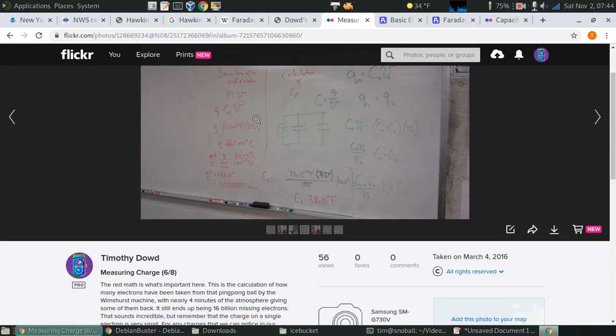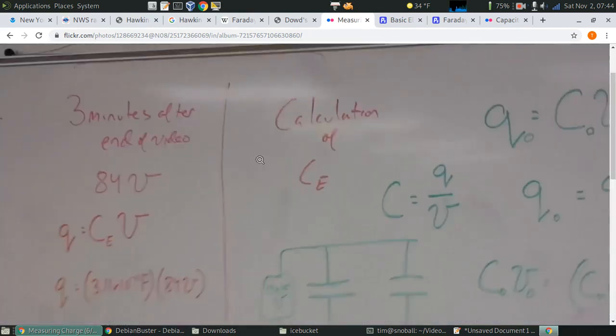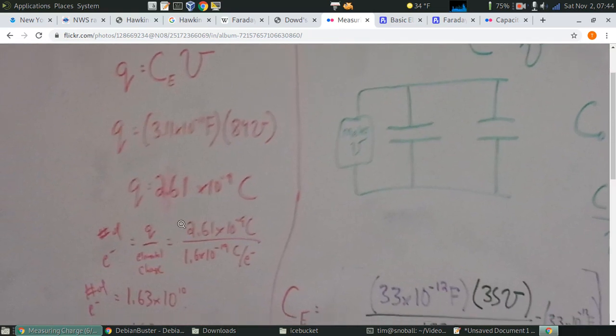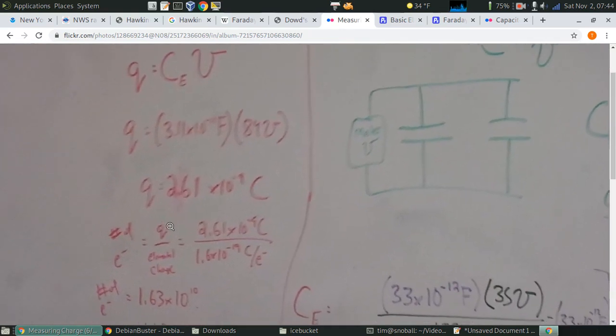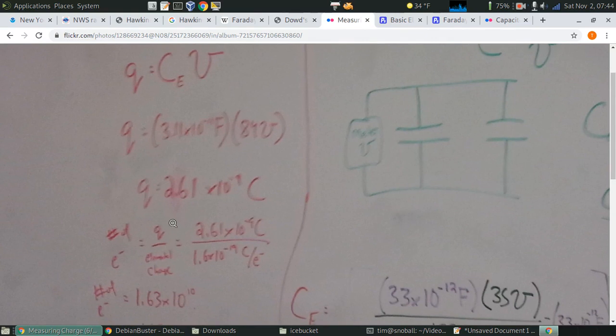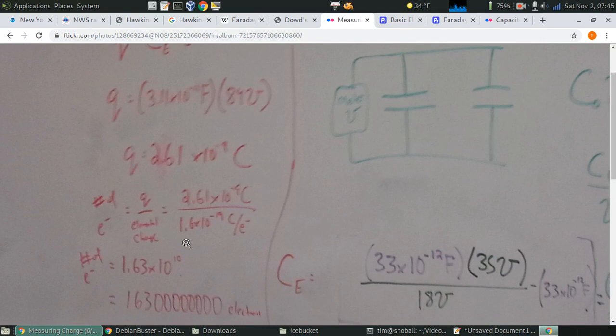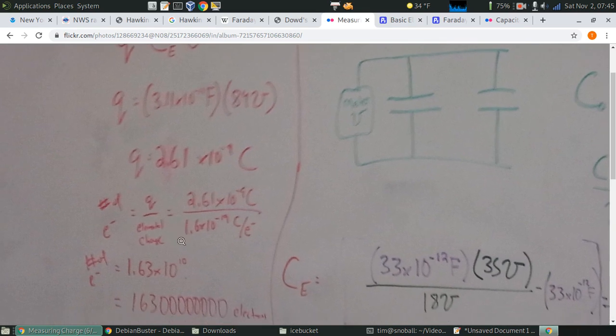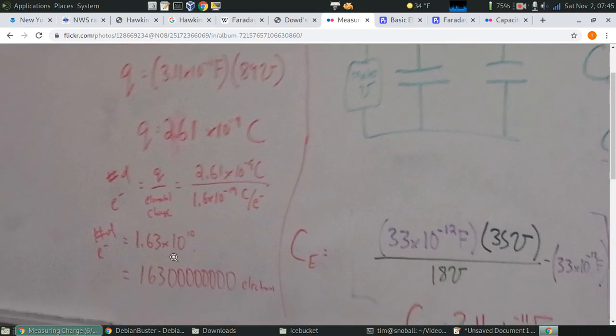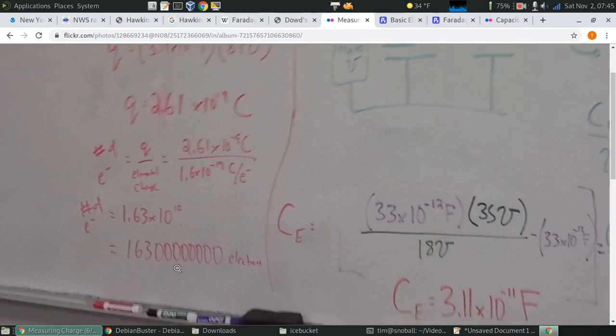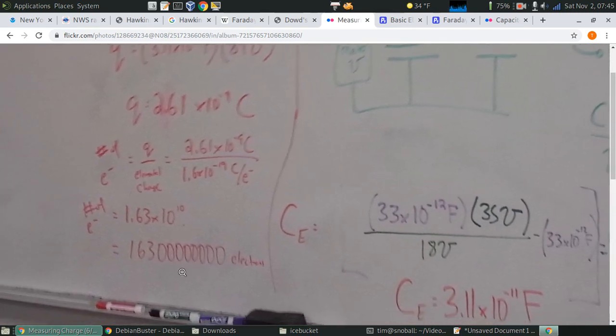So we'll use our capacitance we calculated before as a conversion factor to turn that 84 volts into a charge on the ball. When we do that, we can see that we get 2.61 times 10 to the minus 9th coulombs, which seems like a very small number. But you've got to remember that a single electron only carries 1.6 times 10 to the negative 19th coulombs. The coulomb is a huge unit. So when we divide that charge by the charge on an electron, we get 1.63 times 10 to the 10th electrons, a huge number of electrons that are missing from that ball.